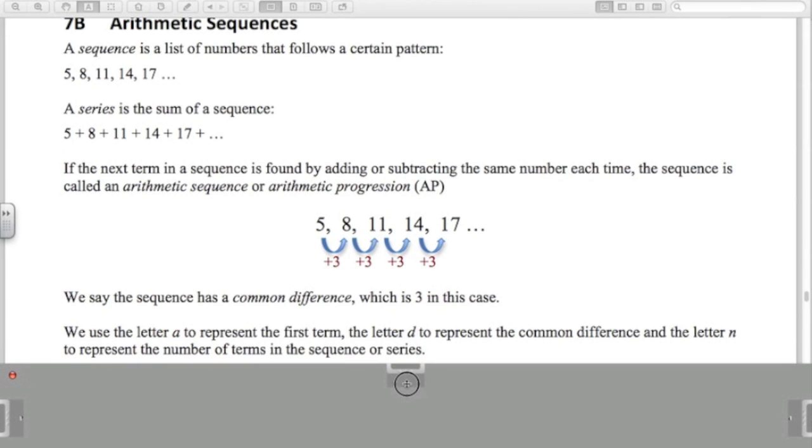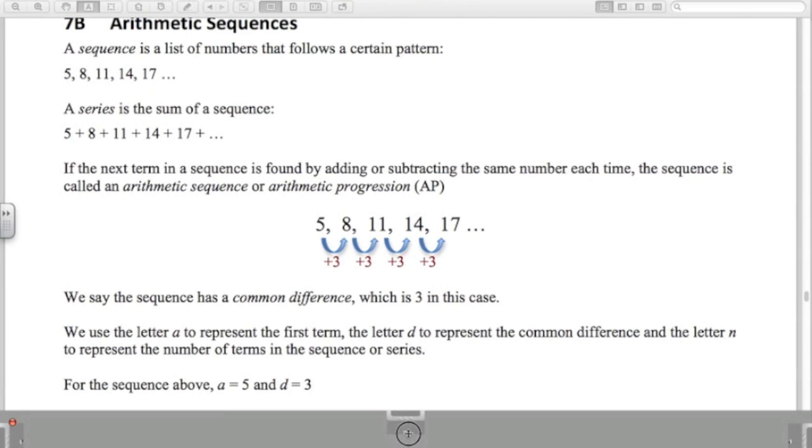We use the letter A to represent the first term and the letter N to represent the number of terms. So you're going to see formulas with A, D, and N in them. A the first term, D the common difference, and N the number of terms.